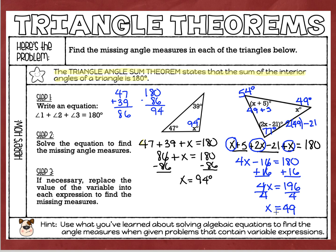To be on the safe side, I should add all three angles together to confirm they equal 180 degrees. 54 plus 49 gives me 103, and 103 plus 77 gives me 180. So those answers are all correct. That is the triangle angle sum theorem — it just means that for any triangle you ever see, those three interior angles inside are always going to total 180 degrees.